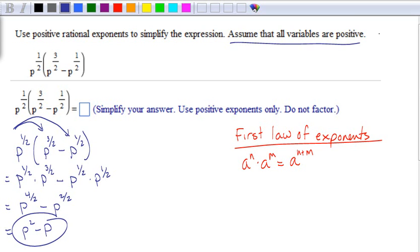The reason, by the way, they say all variables are positive is because if you had a negative variable, when you have something to an even index like p to the 1 half, that's like the square root of p, and that would be a non-real number.